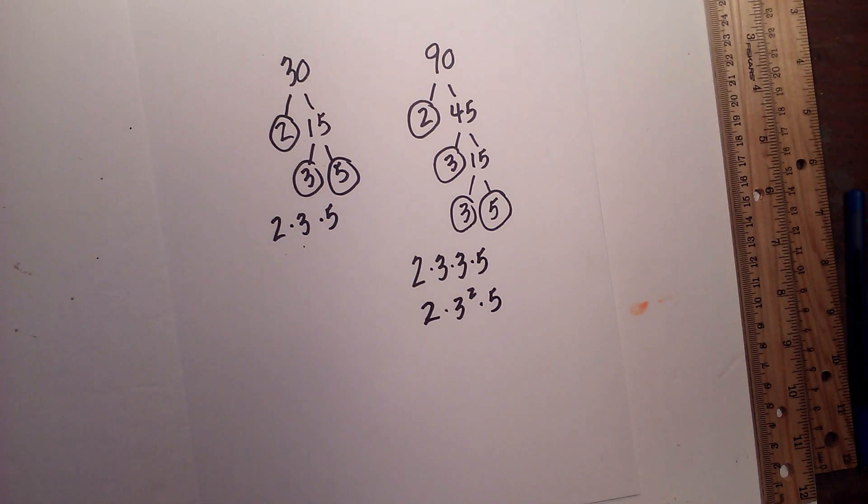So there we go, the prime factorization of 30 and 90. Thanks for watching. Moomoo Math uploads a new math and science video every day. Please subscribe and share.